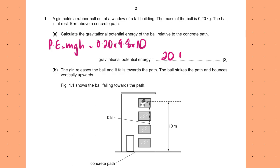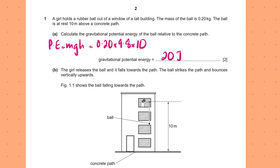Units are not written so you have to write them yourself — this is 20 joules. The girl releases the ball and it falls towards the path. The ball strikes the path and bounces vertically upwards. Figure 1.1 shows the ball falling towards the path.